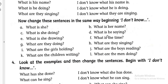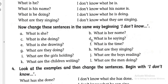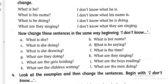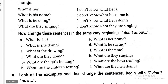Let's see question number D: 'What is he saying?' The answer is: 'I don't know what he is saying.' For question number I: 'What are the girls holding?' The answer is: 'I don't know what the girls are holding.' It's very easy if you see the pattern of changes.